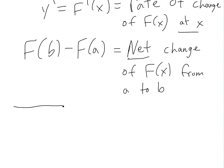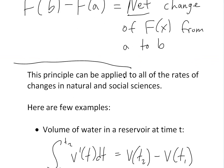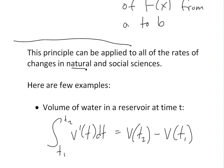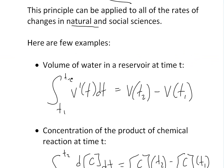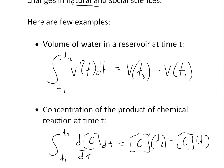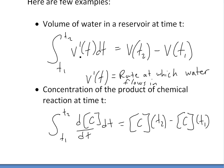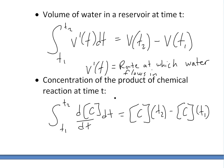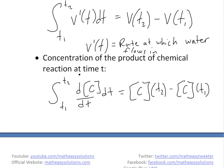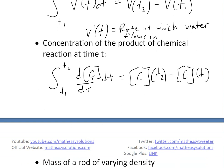There are a lot of applications where we can apply this to. This theorem can be applied to all of the rates of change in natural and social sciences. One of them is the volume of water in a reservoir: if you know the rate at which water flows in, you can get the total volume of water left in the reservoir — basically the net change based on this rate of change. Also the concentration of a product of a chemical reaction, where C bracket C is the concentration — if you have the rate of the reaction, you can get the total net change of the concentration.